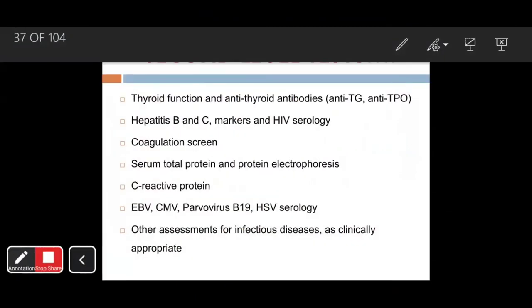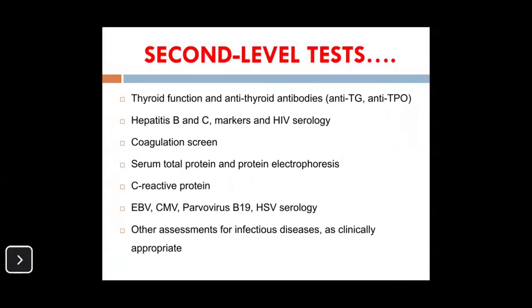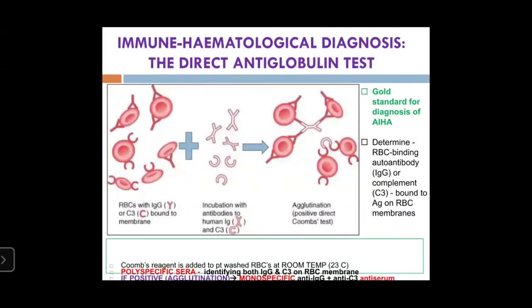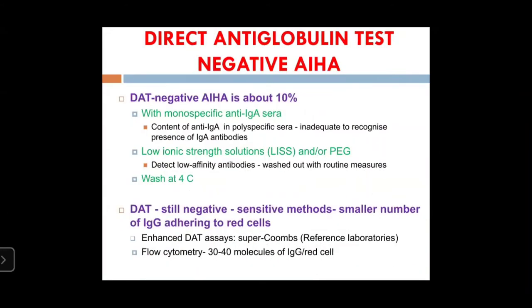In about 10 percent of cases the DAT is negative — either because mediation is through the rare IgA antibody, or because the IgG immunoglobulins have very low affinity and get washed out during processing. In such cases, advise your hematologist to try monospecific anti-IgA sera or wash RBCs with low ionic strength solutions at 4°C. If still negative and antibody numbers are very low, proceed with sensitive tests like enhanced antiglobulin assay (super Coombs) or flow cytometry.